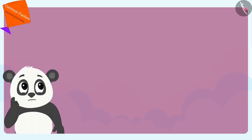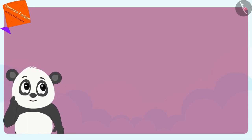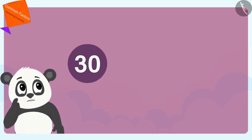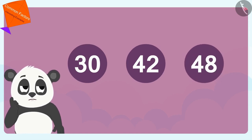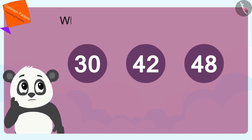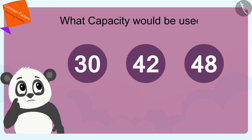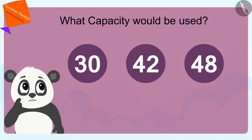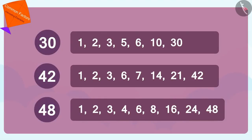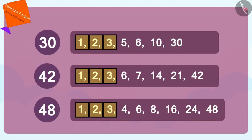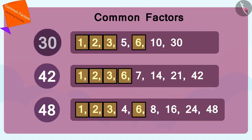Children, if Golu's pots were filled with 30, 42 and 48 liters of milk, can you tell what capacity would be used? If you want, you can pause the video and find the answer. These numbers 1, 2, 3 and 6 are the common factors of 30, 42 and 48.